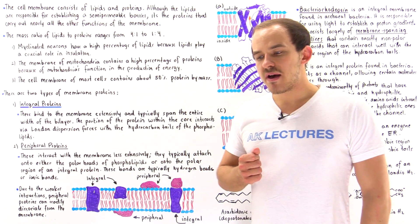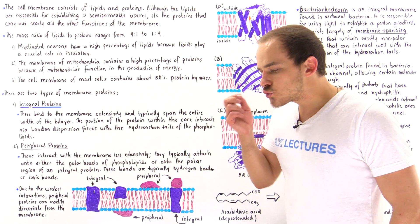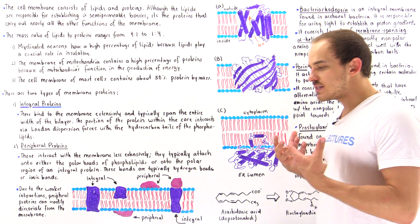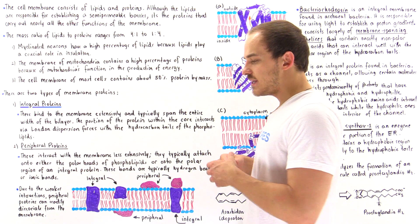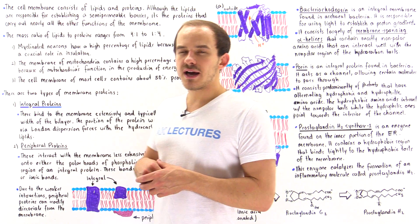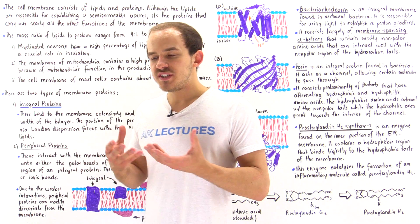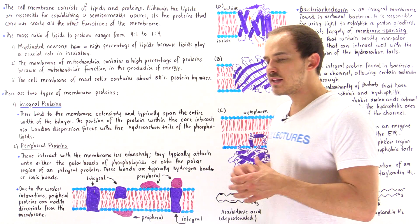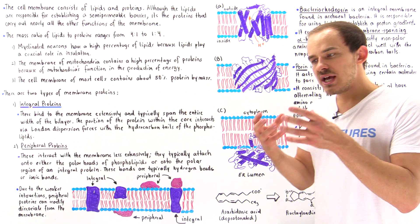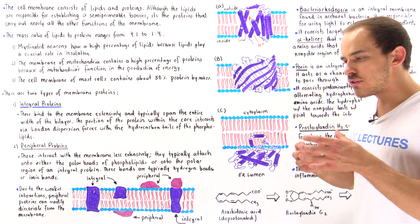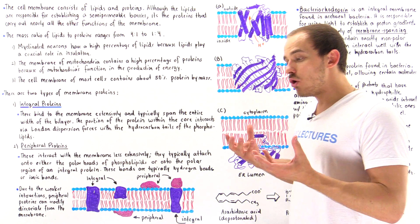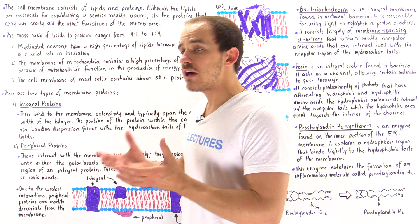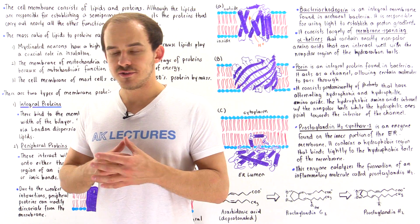The lipid bilayer membrane is an extremely important structure that exists extensively inside our body. We typically find these lipid bilayer membranes surrounding the cells and also enclosing the organelles found within those cells.